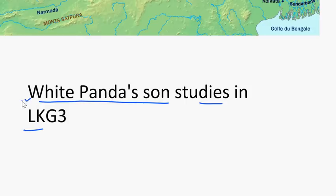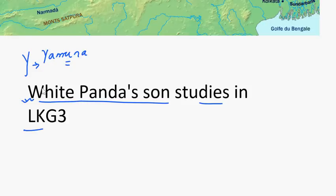For 'white': although the word starts with W, the pronunciation begins with the consonant Y. So we take 'white' for Y, and Y stands for Yamuna. Also, 'white' rhymes with 'right,' so you can relate that Yamuna is a right bank tributary.